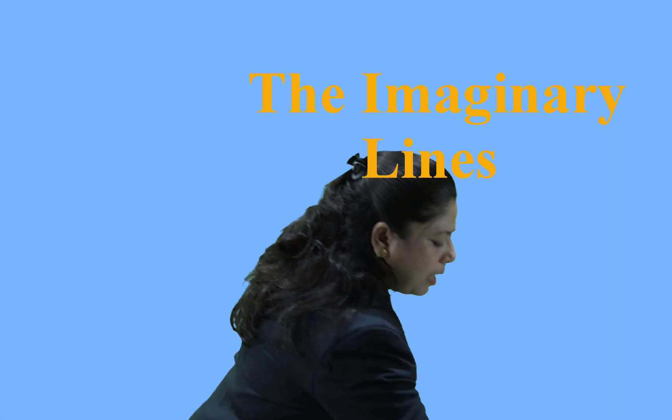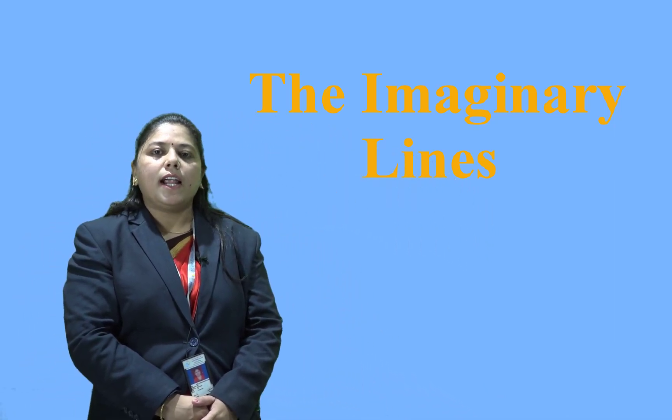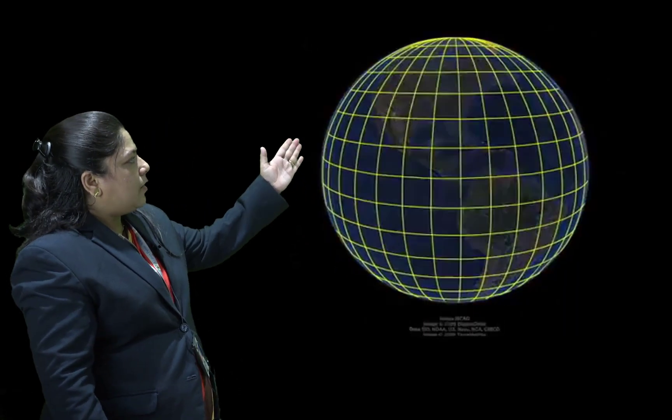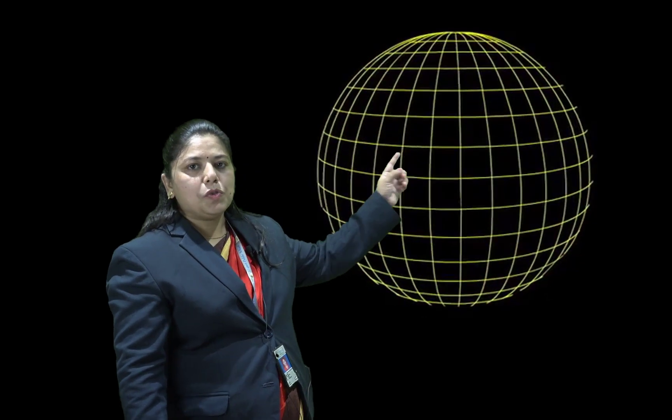Now on Earth, on the globe, there are imaginary lines. These lines are called latitude and longitude. See, the vertical and horizontal lines - the horizontal lines we call parallel lines. Parallel lines move east to west.